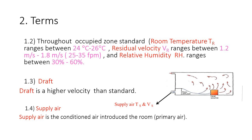The suitable room temperature for human comfort is about 24 to 26 degrees Celsius. The air velocity is about 1.2 to 1.8 meters per second, and the relative humidity is about 30 to 60 percent. This is the comfort zone shown on the psychrometric chart in the previous lecture.